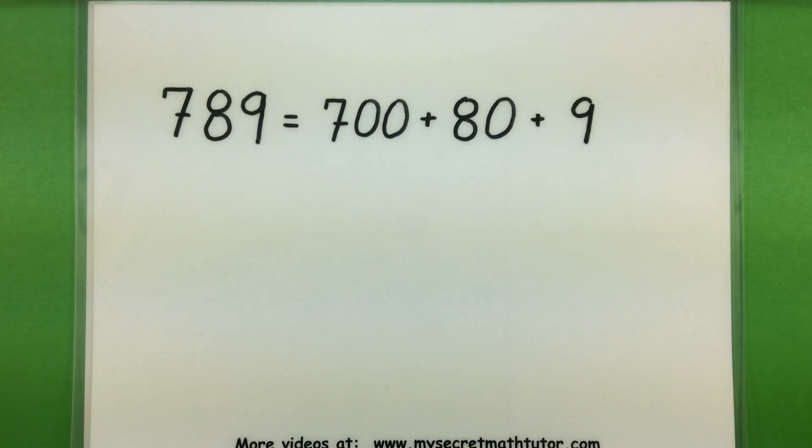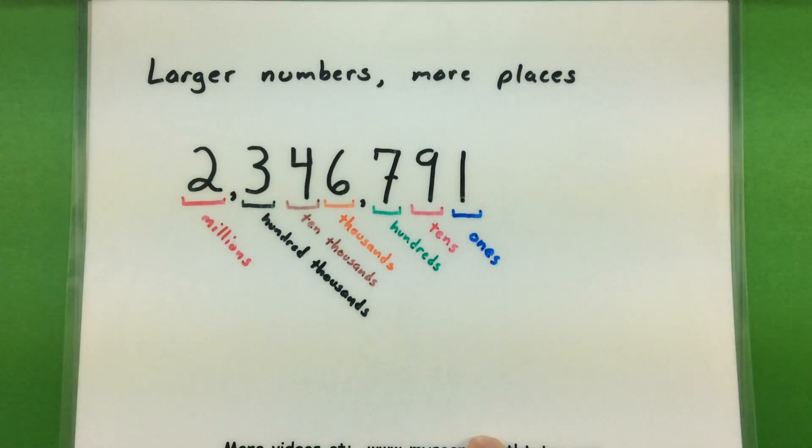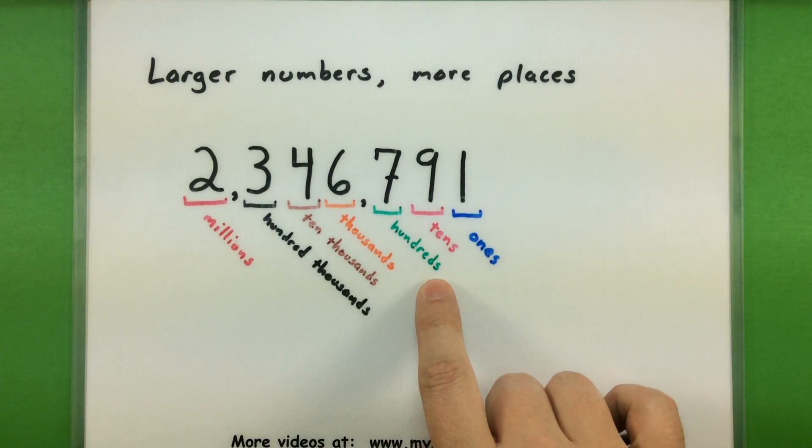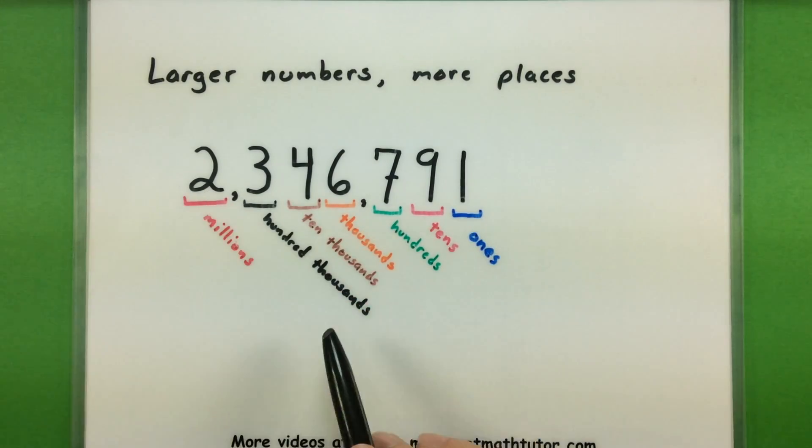As you get into much bigger numbers, we essentially start using more groups of 10 to really describe what we have. So here I have the number 2,300,046,791. And you can see that every single number is in a different location, so it corresponds to a different group.